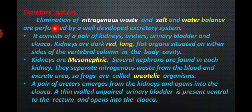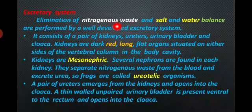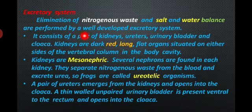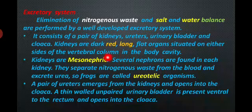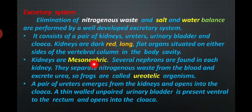The excretory system present in frog is of mesonephric kidney type. Elimination of nitrogenous wastes and salt and water balance are performed by this well-functional excretory system. It consists of a pair of kidneys, ureters, urinary bladder, and cloaca. The kidney is dark red colored, long, flat organ situated on either side of the vertebral column. Mesonephric type is the main kidney type in aquatic vertebrates — fish and amphibians — and is also found as a temporary kidney in reptiles, birds, and mammals.